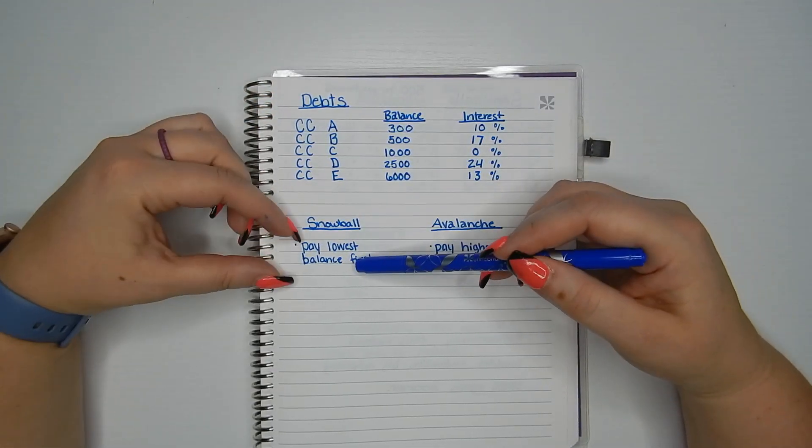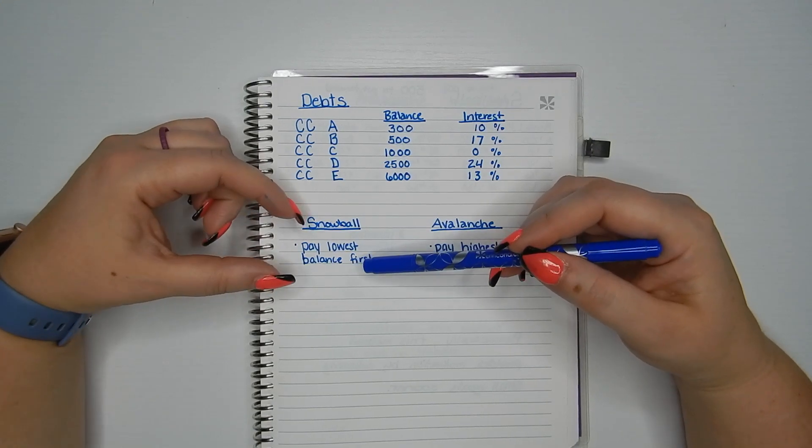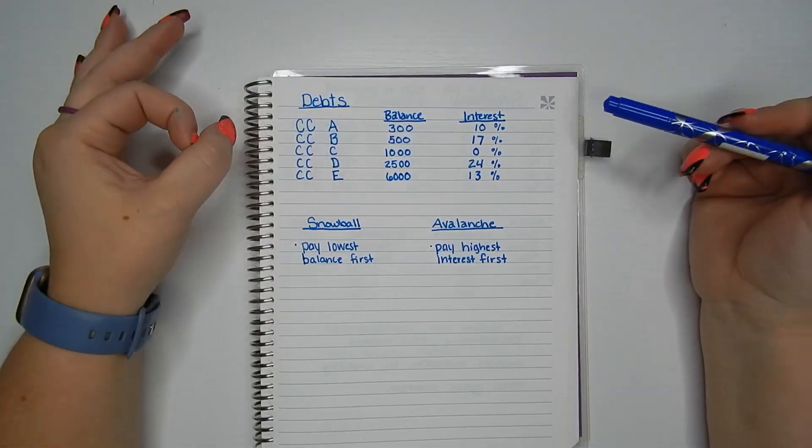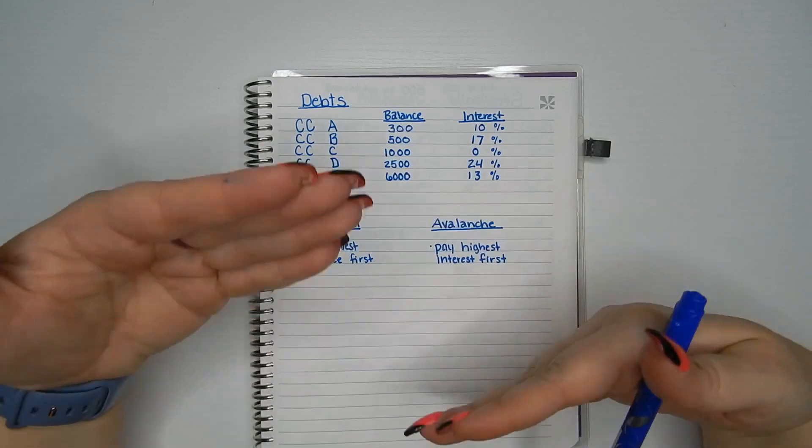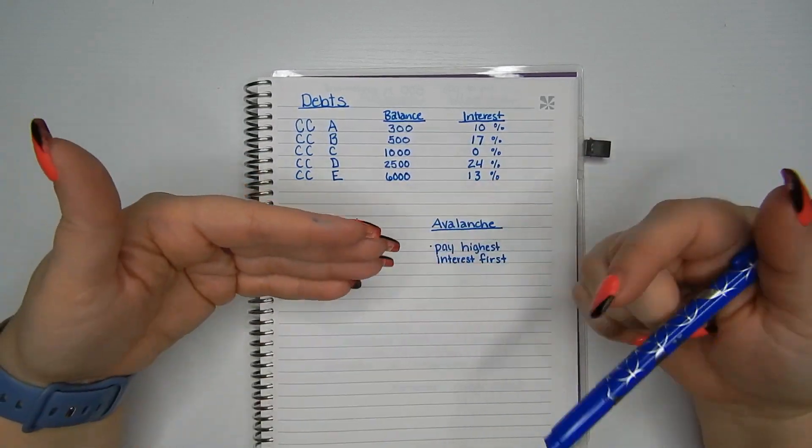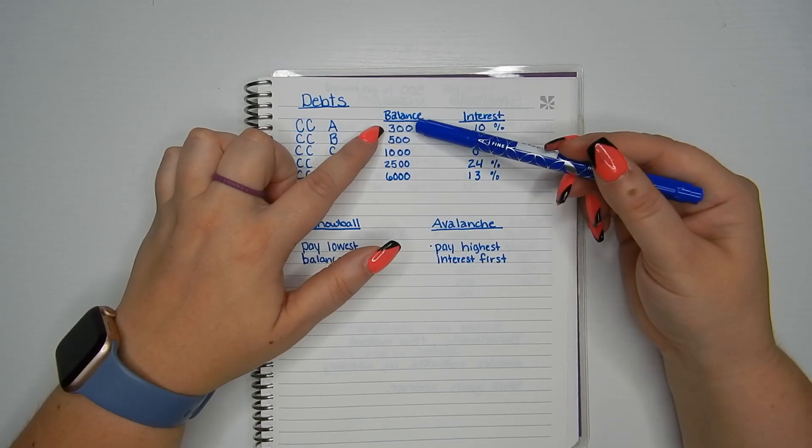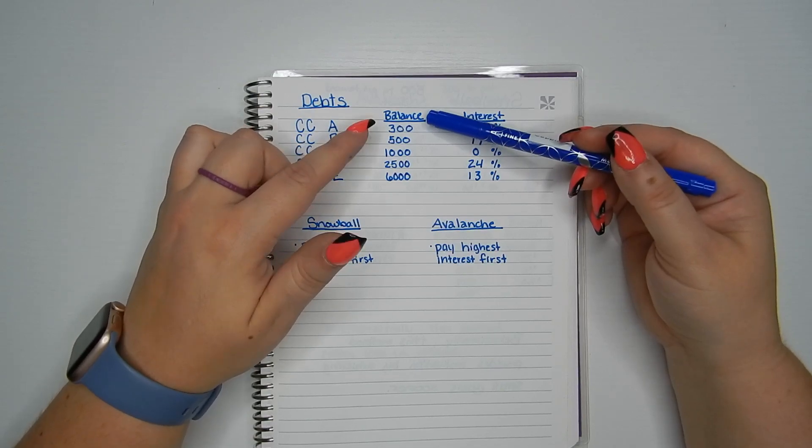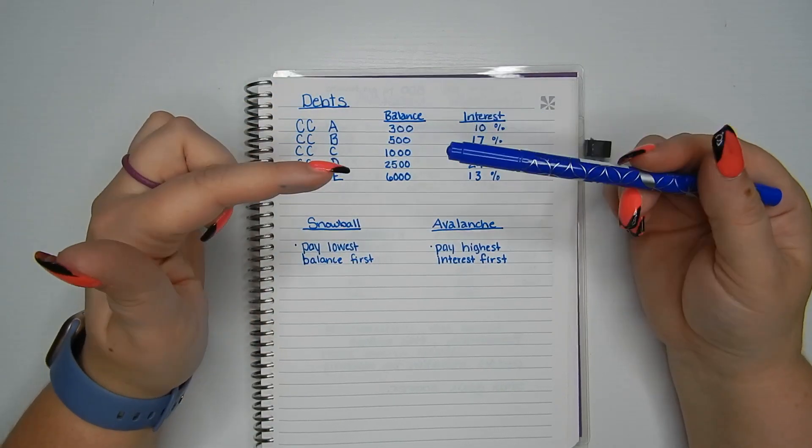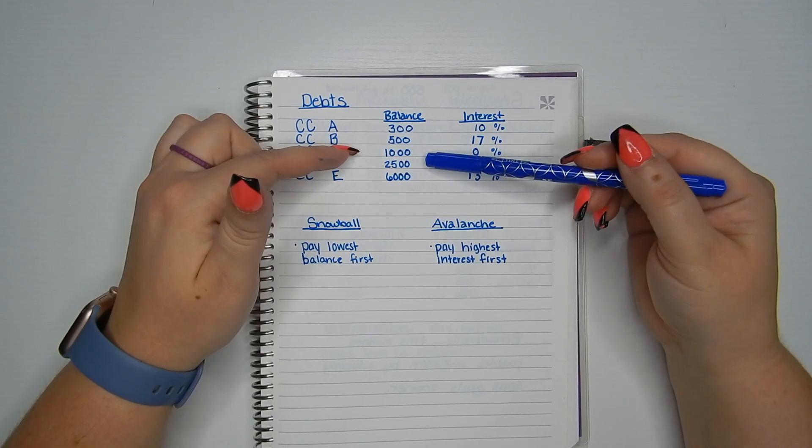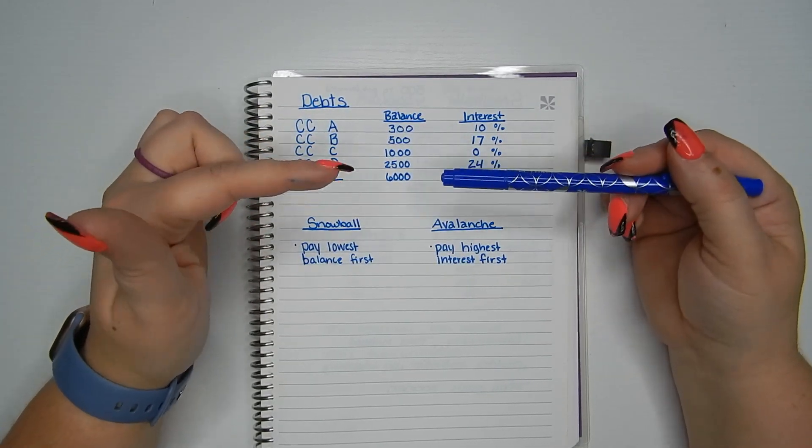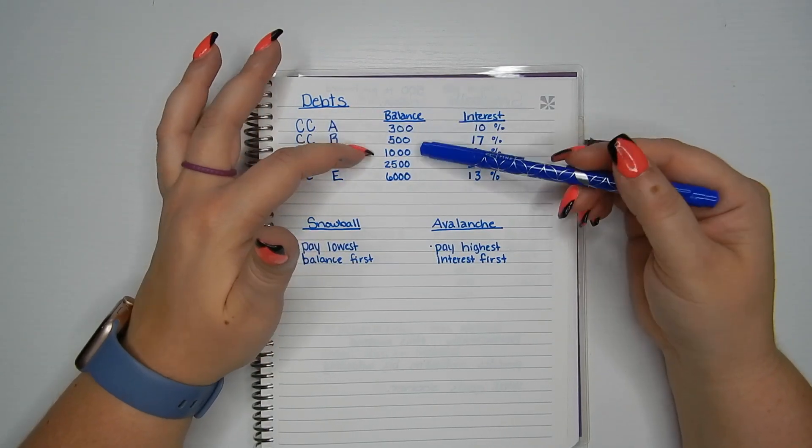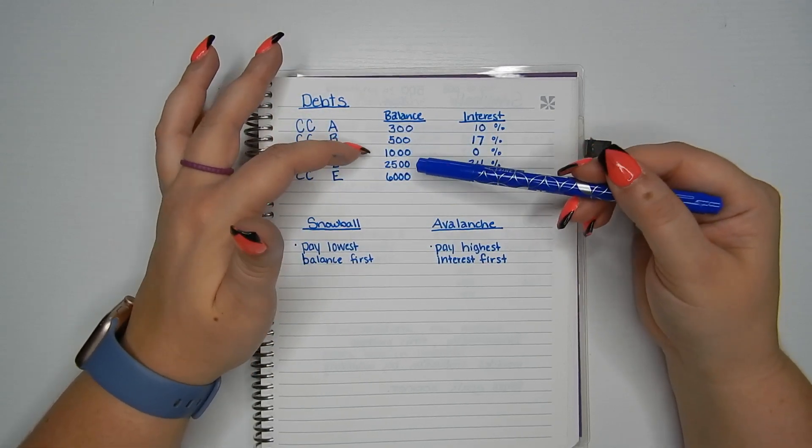So snowball, we would pay the debt with the lowest balance first. And the concept behind that is if you think about a snowball, it starts very small and as it rolls, you build up more snow and more snow and more snow. So you get that great victory when you pay off the low balance one first and then you take whatever you were paying on the low balance and then add it to what you're paying on the second one and see how the snowball grows. So each month, the more you pay off, the more you're paying towards the one card you're focusing on, whereas the rest of the cards you pay the minimum amount due until you get to that card.